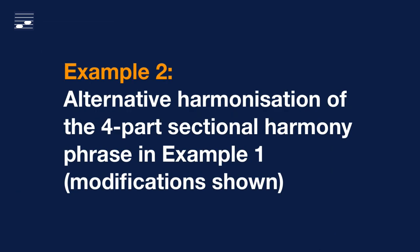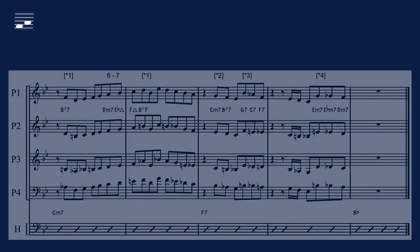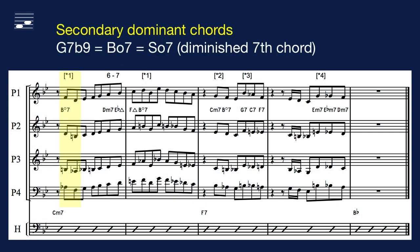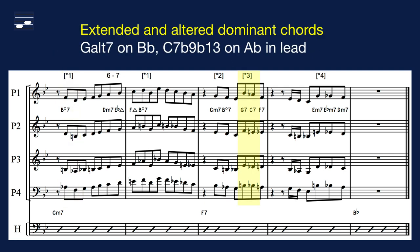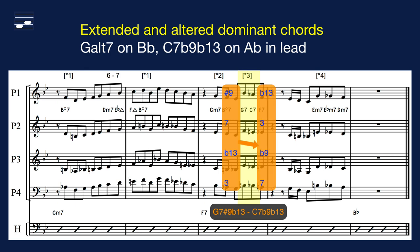We may apply an alternative harmonization of example one — let's concentrate on the modifications. In the opening measure we replace a number of diatonic parallel chords with the standard intermediate dominant chord G7b9, here written as B diminished 7. In measure 3 we apply the new technique, creating a sequence of two altered extended dominant chords: G7 altered and C7b9b13.